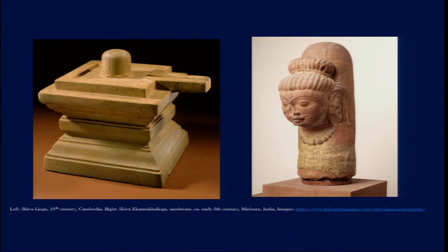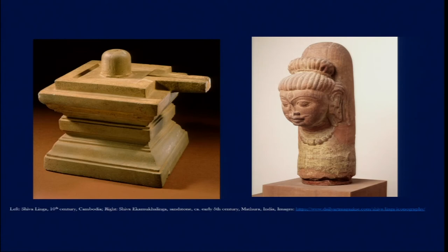On the other hand, we also find figurative expressions — for example, the mukha lingam from 5th century Mathura, in which an image of Lord Shiva projects out of the abstracted lingam shape. This represents an in-between stage where the figurative representation of Shiva comes in contact with the abstracted idea of the lingam. As already mentioned, there is not really one way of looking at these images but multiple ways — so we find both highly narrative expressions and highly abstracted expressions in Hindu art.